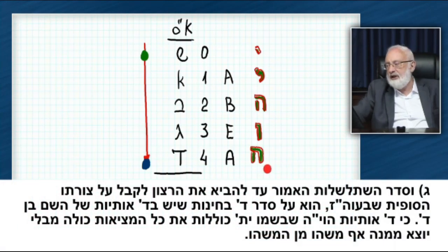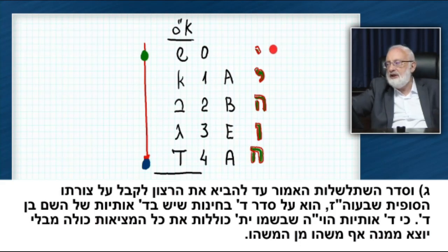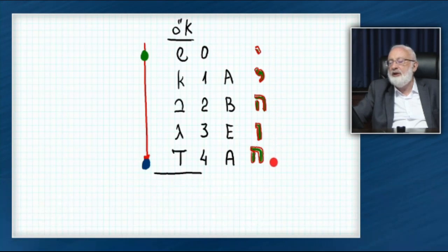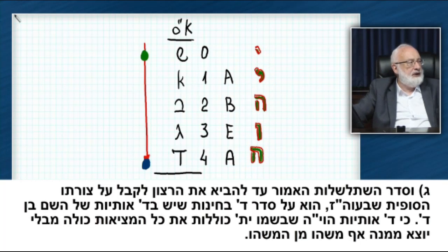So, the order of cascading, which brings the will to receive to its final form in this world. Meaning, here, the will to receive reaches its final form, which is only reception. Follows a sequence of four Pchinot that exists in the four-letter name. These four degrees, four phases. Because the fourth four letter is Havaya. Yud-Hei-Vav-Hei, that means Havaya.